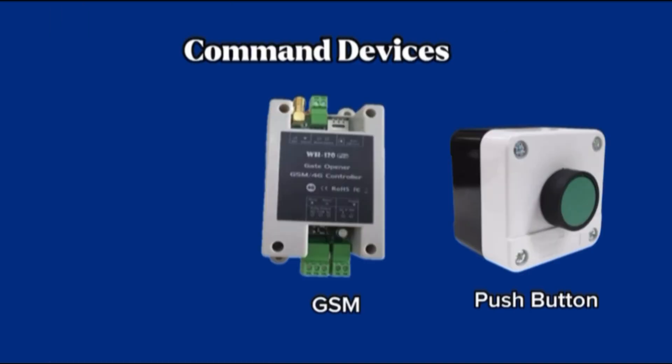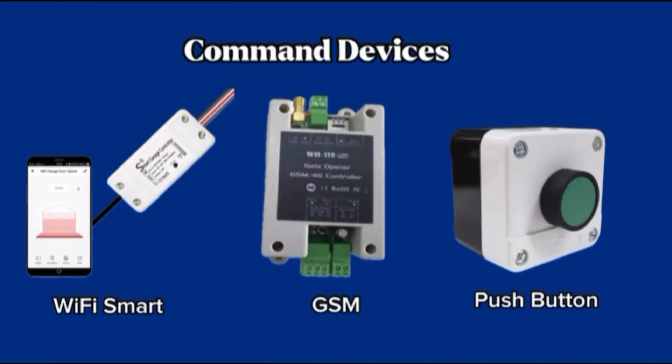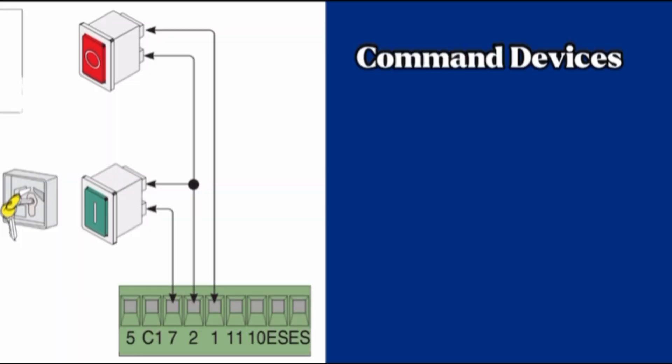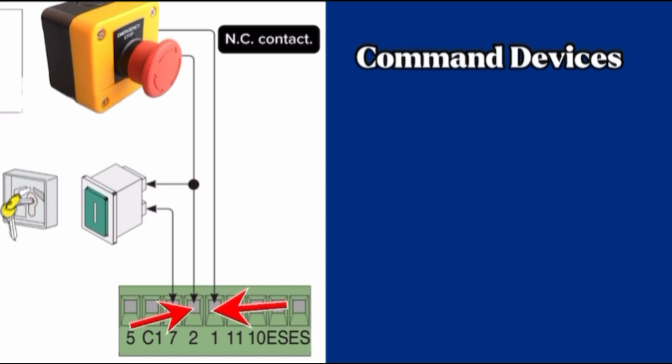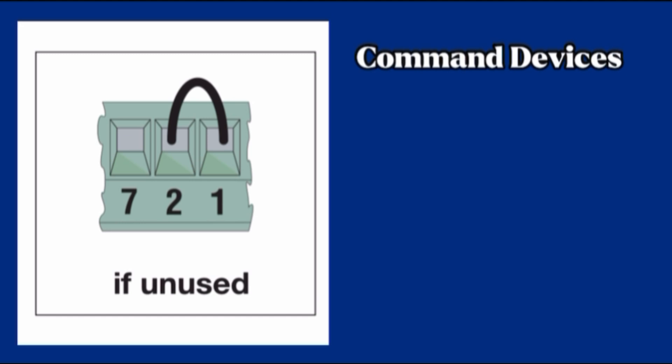Command devices. Terminal 1 with common 2, stop button. It is NC contact. Gate stop button with exclusion of automatic closing. To resume movement press command button or transmitter button. If unused, short circuit contact Terminal 1 and Terminal 2.